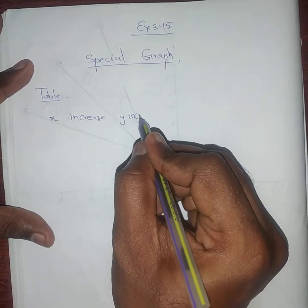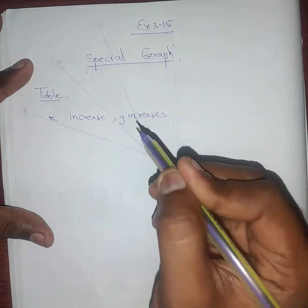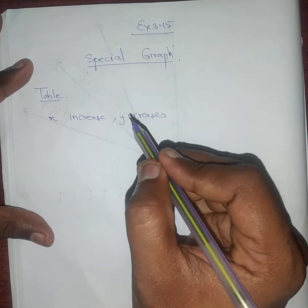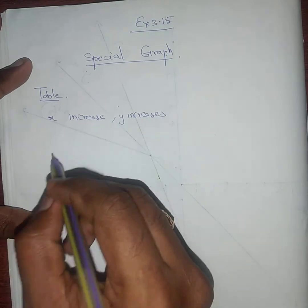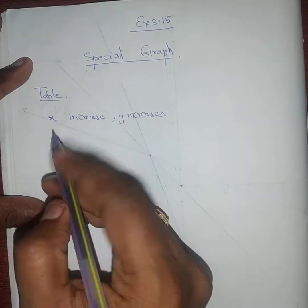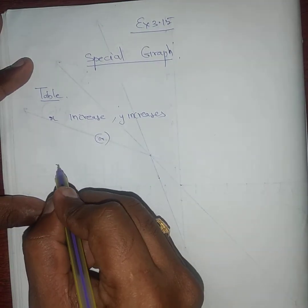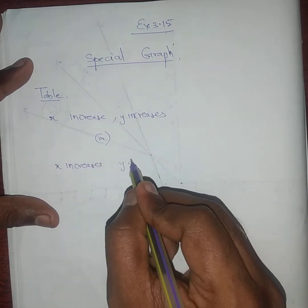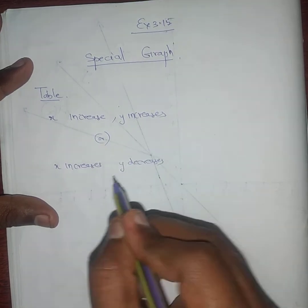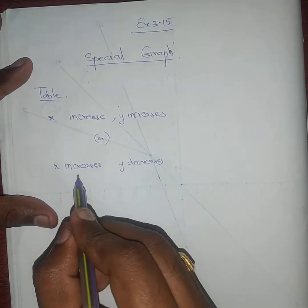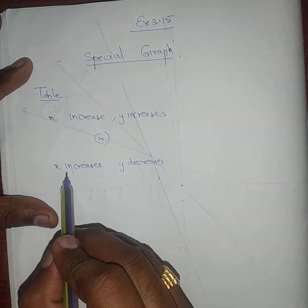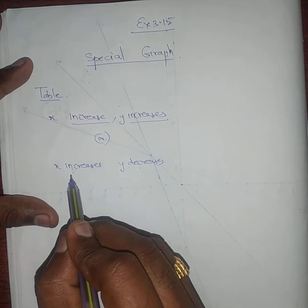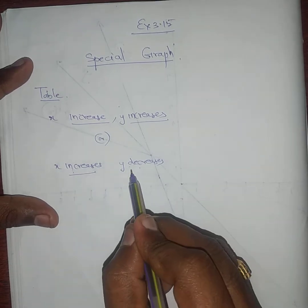In the table, if x increases then y increases. Otherwise, if x increases then y decreases. So both can increase together, or one increases while the other decreases. X increases y decreases, or y increases x decreases — these are the two cases.